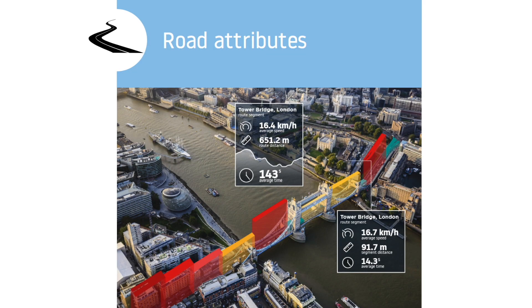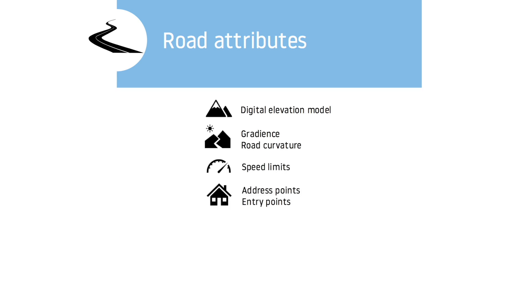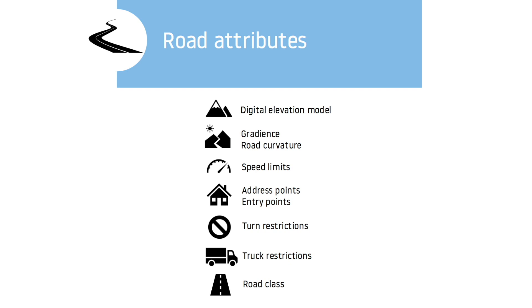How about the road attributes? Until we all get deliveries or taxis by autonomous flying cars, we still have to contend with the road network. Things like elevation, curvature, speed limits, entry points, restrictions for specific vehicles like trucks or those carrying hazardous materials, and toll roads are all things that need to be considered when moving people and packages.